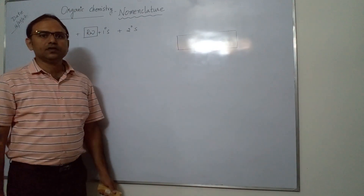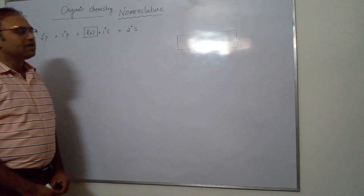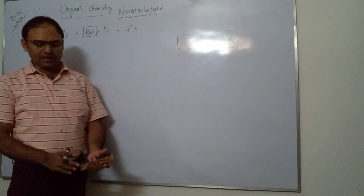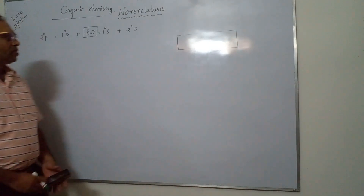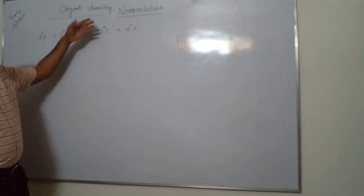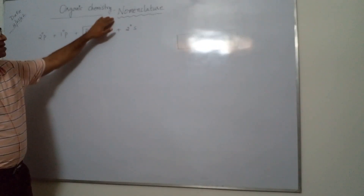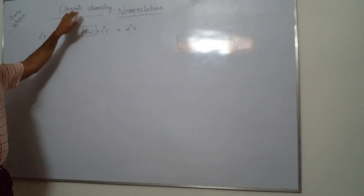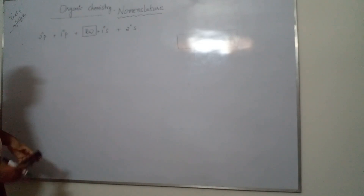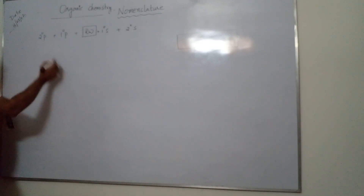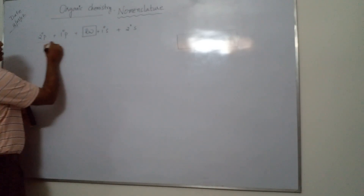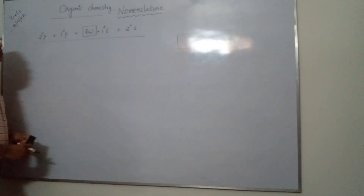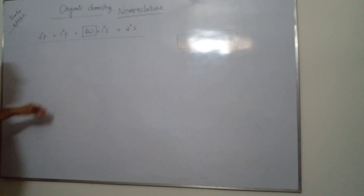Good evening students. Today's topic is organic chemistry nomenclature. We know nomenclature is the naming of organic compounds. To write the nomenclature, we have a simple formula.